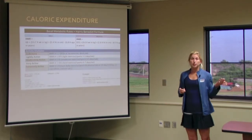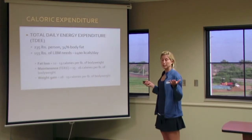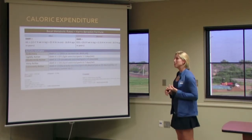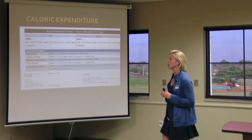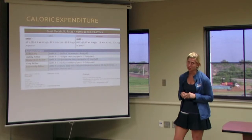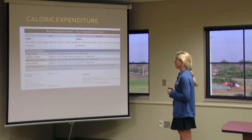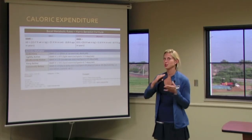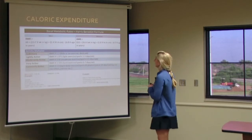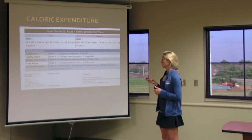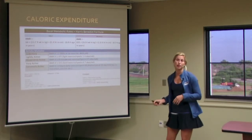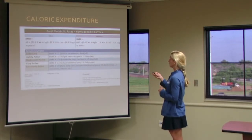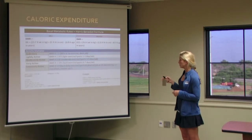Now we are moving on to basal metabolic rate, BMR. This is something that can be measured in a clinical setting but has equations so you can calculate it yourself. In the Harris-Benedict formula, we look at gender differences. We are not looking at body composition, but gender and mass itself. In addition to mass, we also look at height in centimeters and age in years, split up to focus on different body types. There are examples of this in your book.